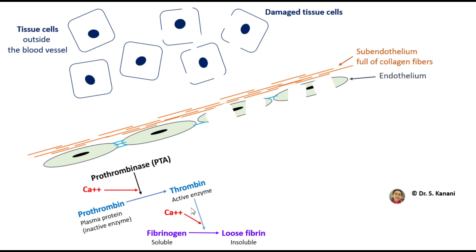Thrombin, in the presence of calcium ions, converts fibrinogen — which is a plasma protein built by liver cells — into fibrin.